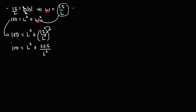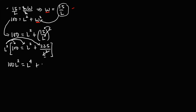Since this equation contains a fraction, we multiply the whole equation by l squared. Distributing gives us 100 l squared equals l to the power of 4 plus 225. Equating to zero by transposing 100 l squared to the right, we get: l to the power of 4 minus 100 l squared plus 225 equals 0.